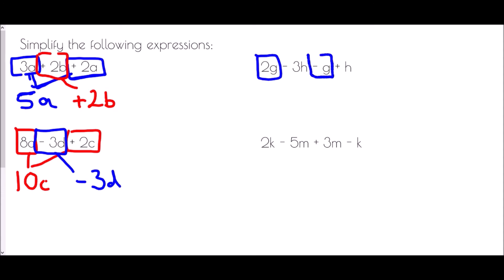In 2G plus negative G - remember the G without a number is treated as negative 1 - so that's 2G take away 1G, leaving just 1G. For the H's: negative 3H plus H, which is like 1H, means negative 3 plus 1 gives negative 2H. So the simplified version is G take away 2H.